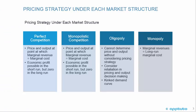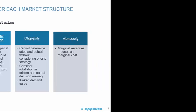Looking at the pricing strategy under each market structure: in perfect competition, price and output are set where marginal revenue equals marginal cost. Similarly, for monopolistic competition, price and output are set where marginal revenue equals marginal cost. In oligopoly, we cannot determine price and output without considering the pricing strategy. For monopoly, marginal revenue equals the long-run marginal cost.